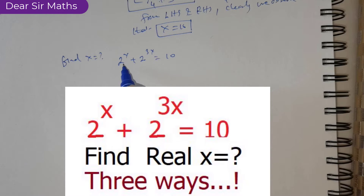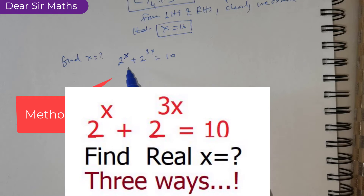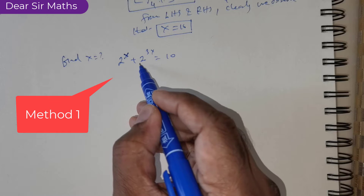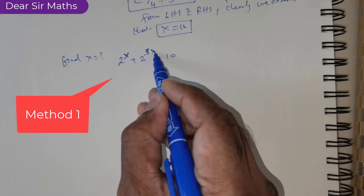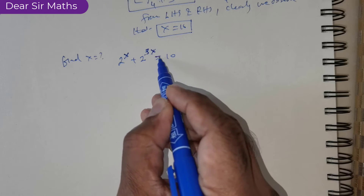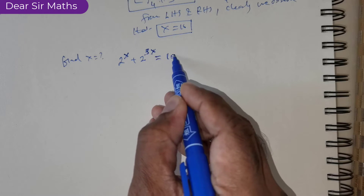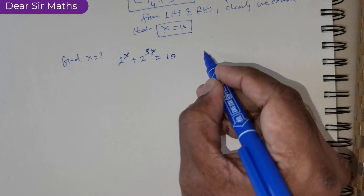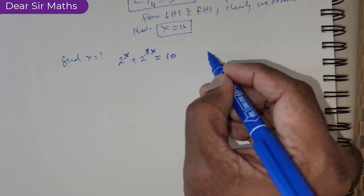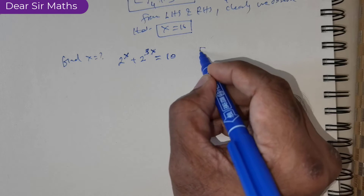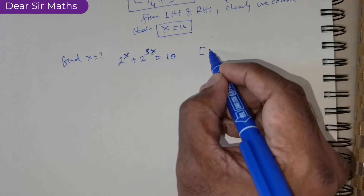Hi everybody. We are expected to find the value of x given that 2 raised to the power of x plus 2 raised to the power of 3x is equal to 10. There are three ways I am going to show you how to exactly find the solution.